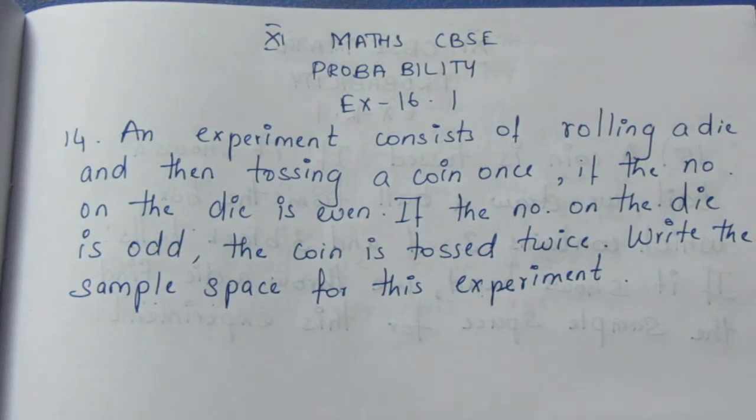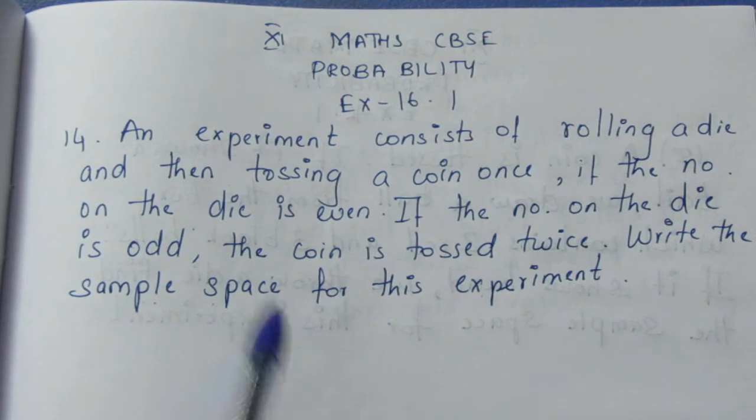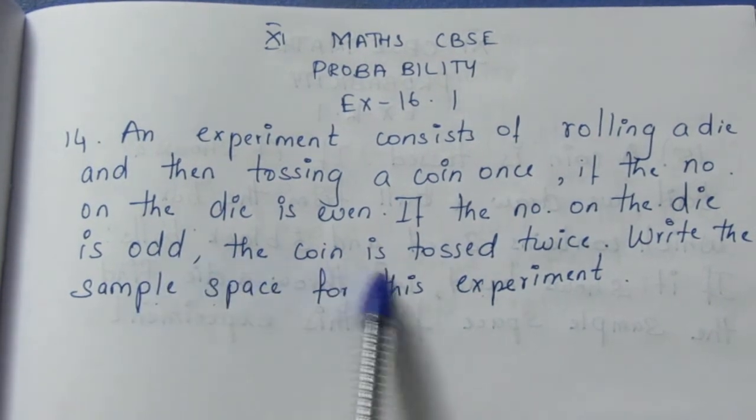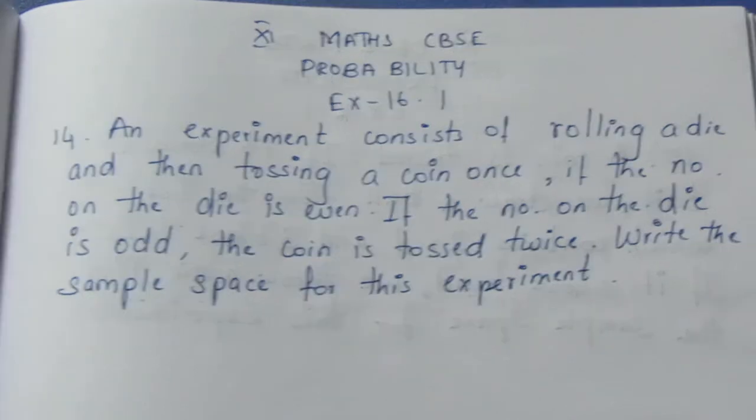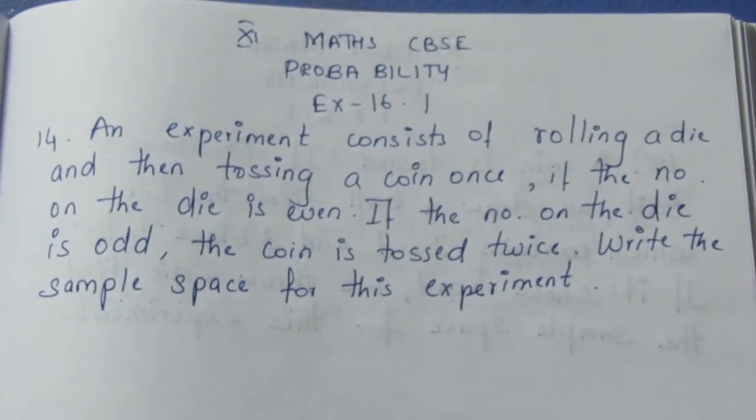So if you want to toss a coin, even number is odd, if the coin is tossed twice. If the number on the die is odd, the coin is tossed twice. So if you want to toss two coins, write the sample space of this experiment.